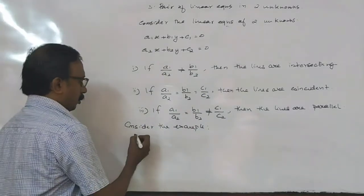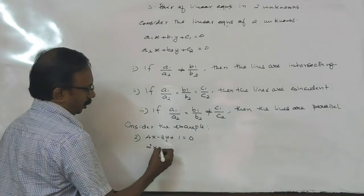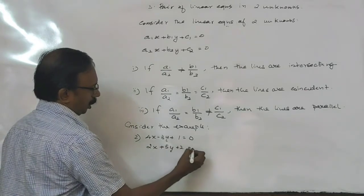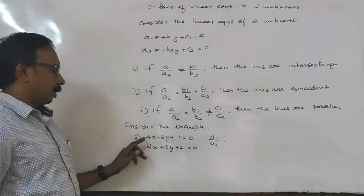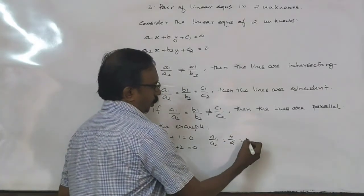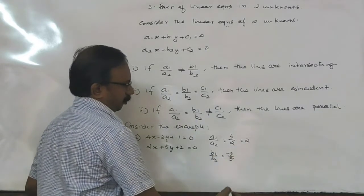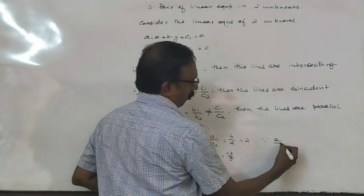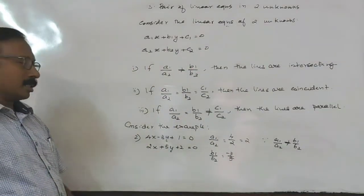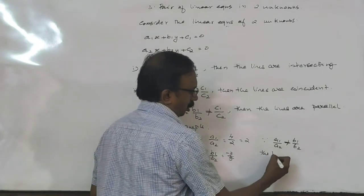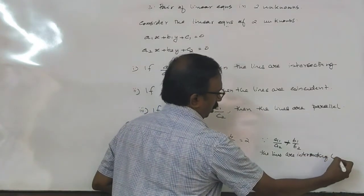For example: 4x minus 5y plus 1 is equal to 0, and 2x plus 5y plus 2 is equal to 0. Here a1 by a2 is equal to 4 by 2, that is 2, and b1 by b2 is equal to minus 3 by 5. Since a1 by a2 is not equal to b1 by b2, therefore the lines are intersecting lines.